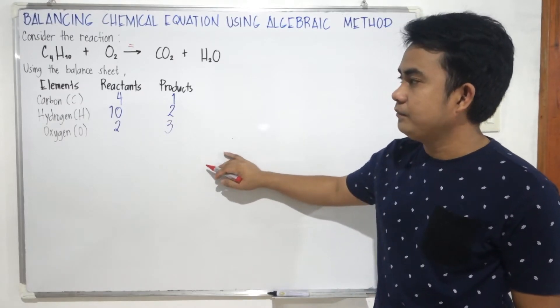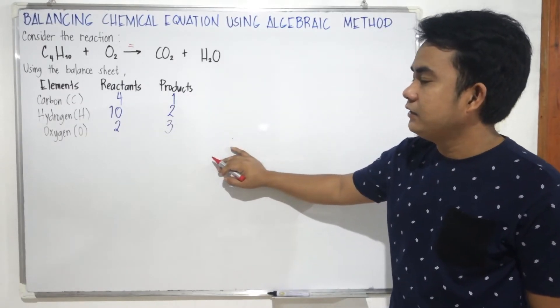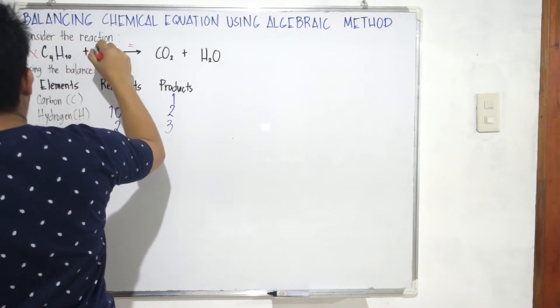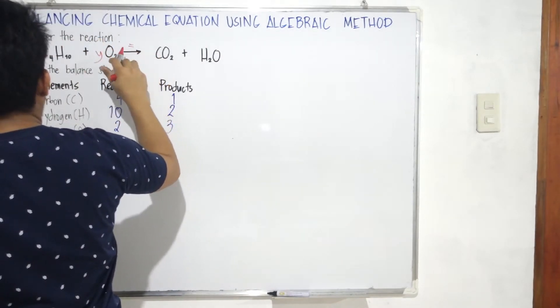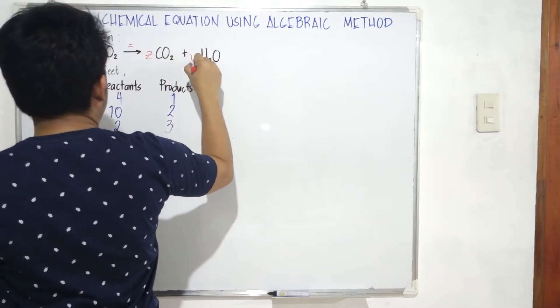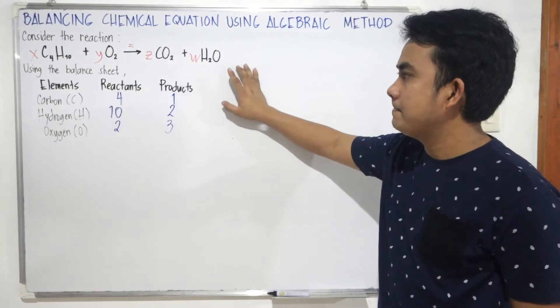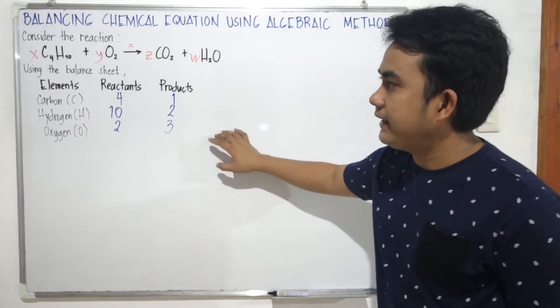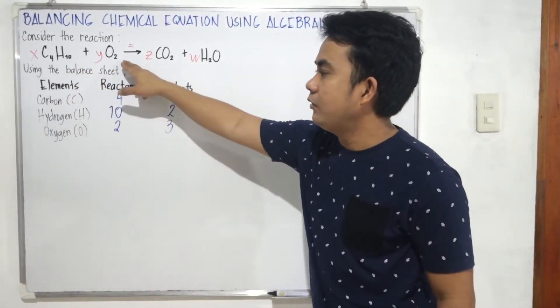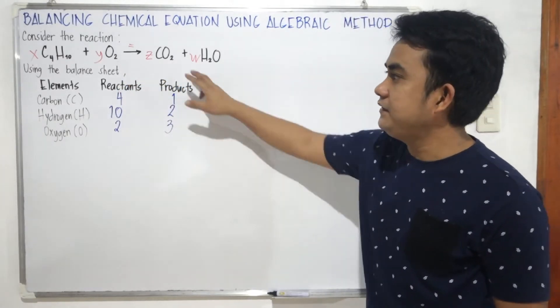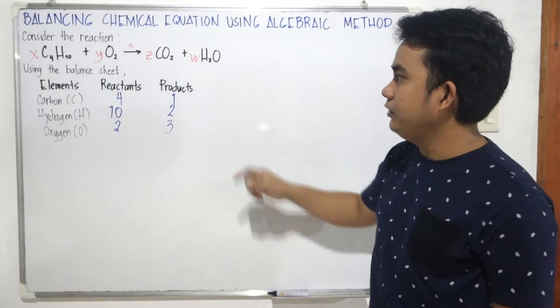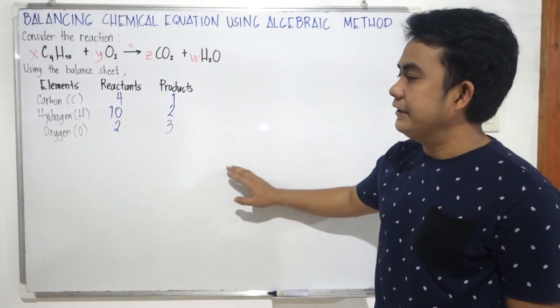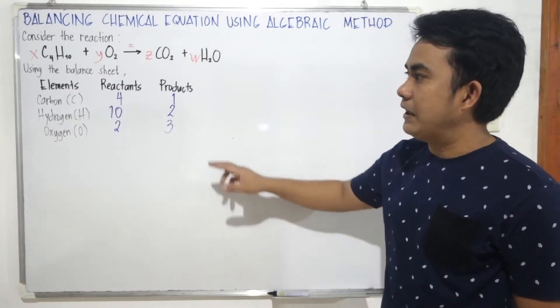Since we have four species, we'll use the variables x, y, z, w. So we have x as coefficient for C4H10, we have y for the coefficient of O2, and z for coefficient of CO2, and w for the coefficient of H2O.